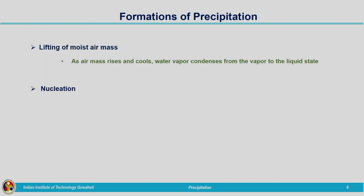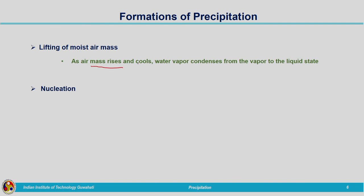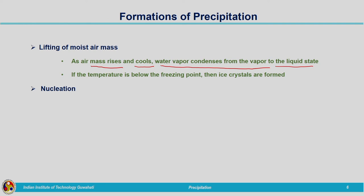Lifting of moist air mass means the air rises. When water vapour is produced it will be warm and lesser in density. That air mass will be lifted up into the atmosphere due to wind action, as we have seen when discussing atmospheric circulation. As the air mass rises, the temperature reduces and it becomes cool; because of that water vapour condenses from the water vapour state to liquid state. As the air mass is rising it will cool and condensation of water vapour takes place, producing liquid. It may not always be liquid — if the temperature is below the freezing point then ice crystals may be formed.